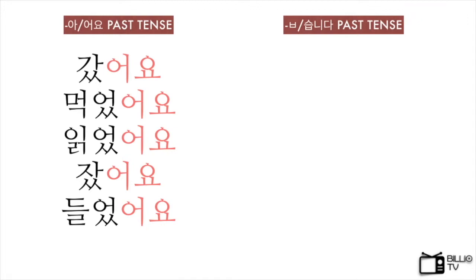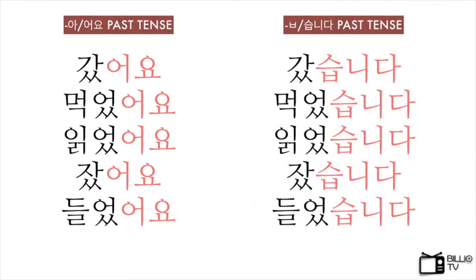So far, we learned how to make the past tenses of the A-Oyo form. Now, we can also make the past tenses of the 습니다 form. You can just change 어요 to 습니다. 갔어요 → 갔습니다. 먹었어요 → 먹었습니다. 읽었어요 → 읽었습니다. 잤어요 → 잤습니다. And 들었어요 → 들었습니다.